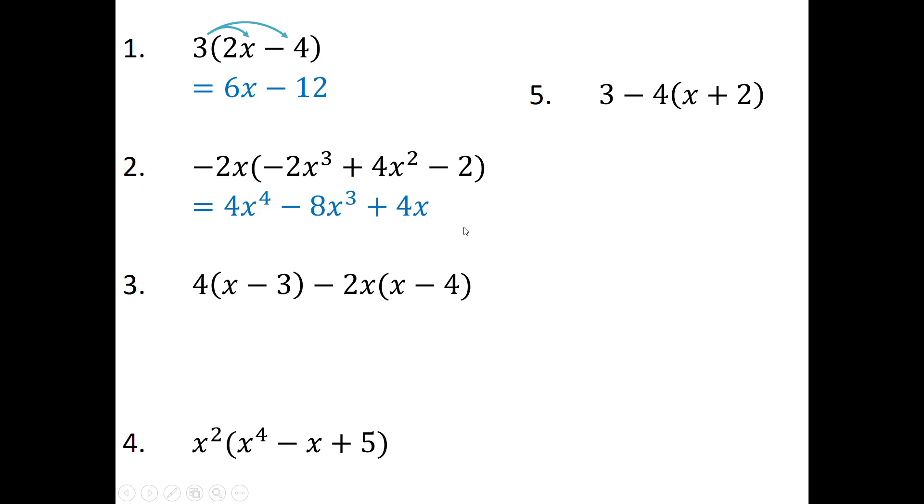That's as simple as the expression is going to get. Number 3, I need to distribute twice, so I need to distribute the 4 into the first bracket, and the negative 2x into the second bracket. So 4 times x, 4 times negative 3, that's what I'm going to get. Then same thing for the second bracket, negative 2x times x will give me negative 2x squared. Negative 2x times negative 4 will give me positive 8x. Then I've got my like terms that you can see in red.